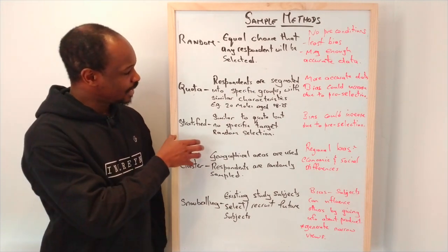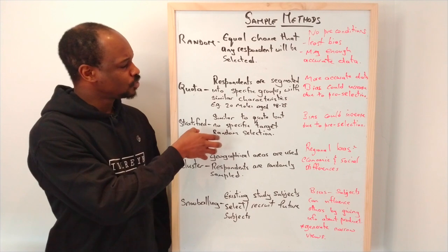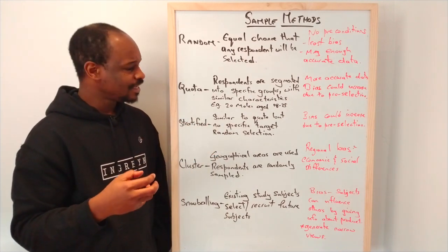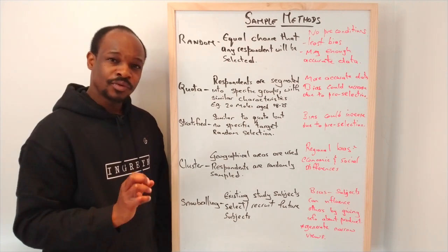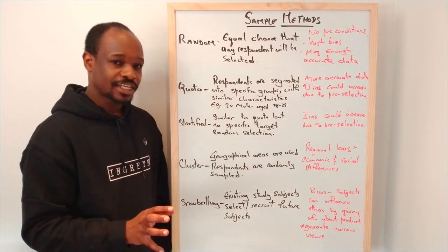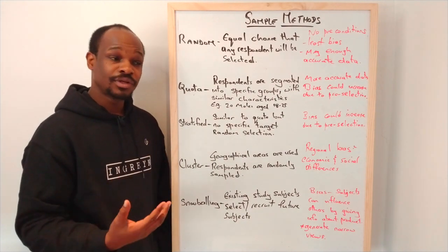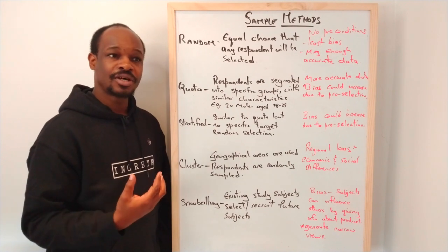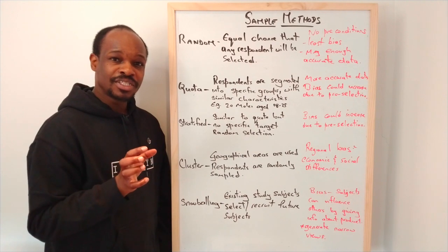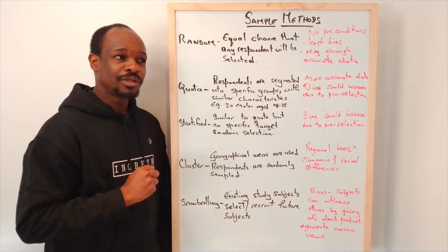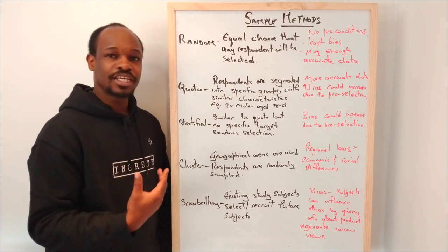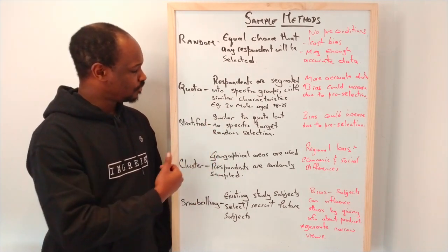For stratified sampling, it's similar to quota sampling where there is a segment. We have a segment but it's not a specific target. We might choose a segment based on similar characteristics, but it will not be so targeted. We might want males but it will not be targeted to say males 18 to 25.